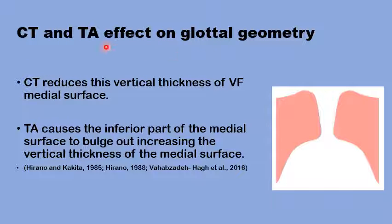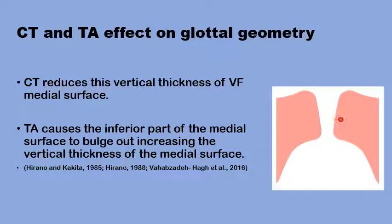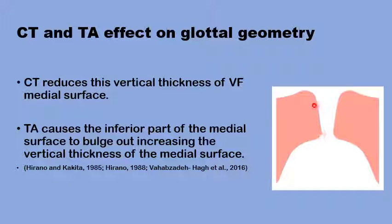Finally, these two muscles — the cricothyroid and the thyroarytenoid — can also change the glottal geometry, the configuration of the glottal canal during phonation, and the mode of contact of the two vocal folds. The cricothyroid muscle would stretch the vocal folds and reduce the vertical thickness of the vocal folds' medial edges. Whereas the activation of the thyroarytenoid muscle would do the opposite: it would increase the vertical thickness of the vocal fold medial edge and also help in the medial bulge of the inferior part of the vocal fold medial edge.